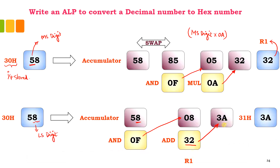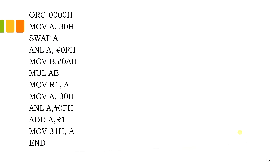This is the final result of my operation — the decimal number converted to hex. This has to be stored in memory location 31H, so output is stored in 31H. Coming to the code — because I have explained the logic, this should be very simple. The starting address corresponds to the start of the program. Input is in 30H and our number was 58.